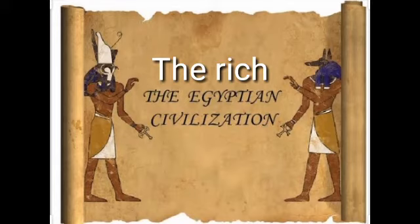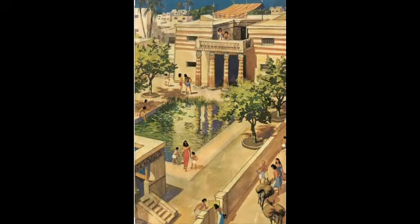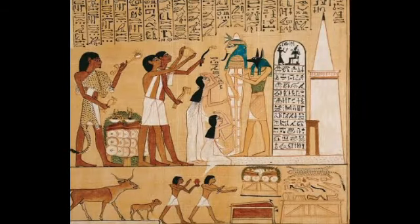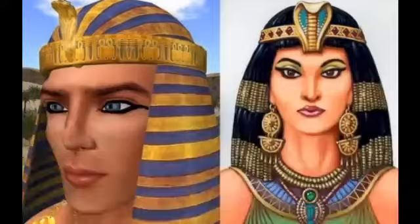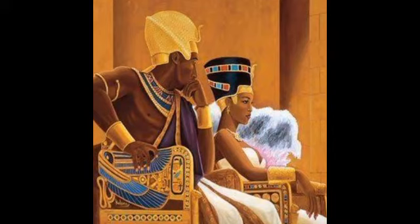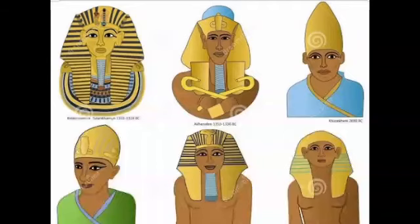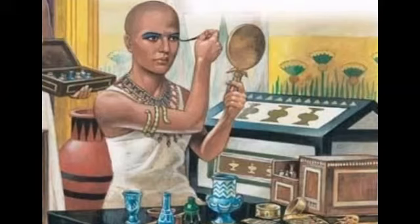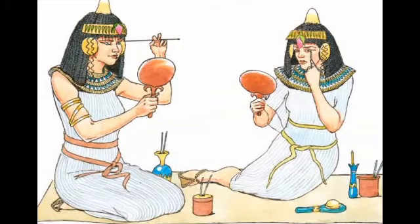The rich lived in big houses decorated with frescoes — pictures painted on a wall or ceiling using watercolour or wet plaster. Household work was done by servants or slaves. Both men and women wore jewelry made of gold and precious stones. They also wore wigs or headdresses — the wealthier the person, the more elaborate and expensive the headdress. Cosmetics, particularly eye makeup, were also used by both men and women.